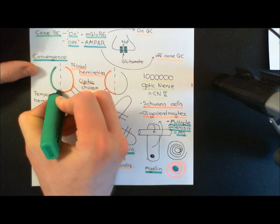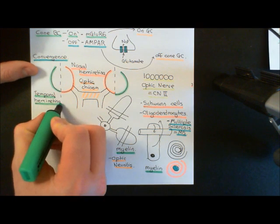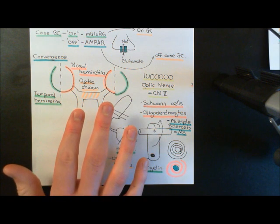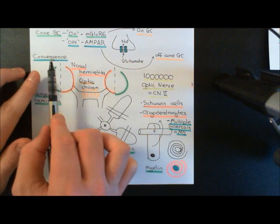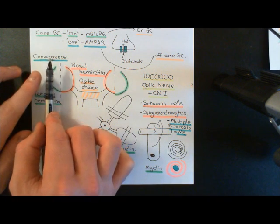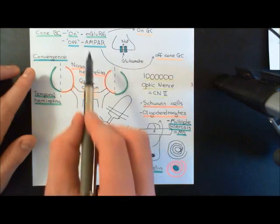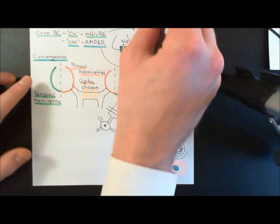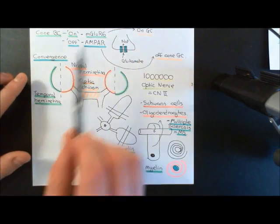The left temporal hemiretina and the right temporal hemiretina are the temporal portions. A little bit of motivation for why the nasal hemiretina fibres are going to cross: think about which portions of the visual field each part of the retina is actually going to see. The left temporal hemiretina is going to be looking at light coming from the right — i.e., receiving visual information from the right visual hemifield.